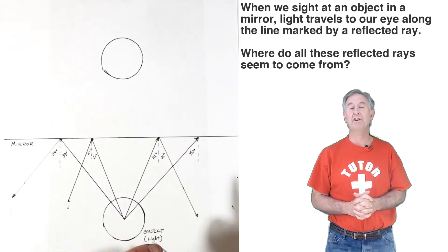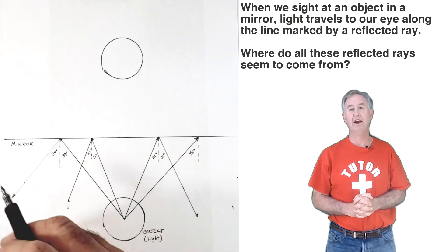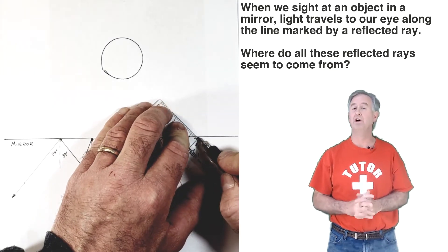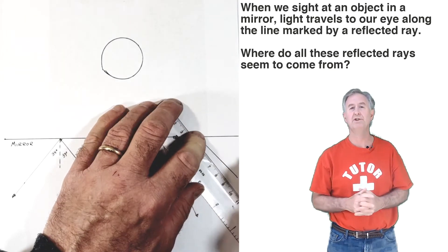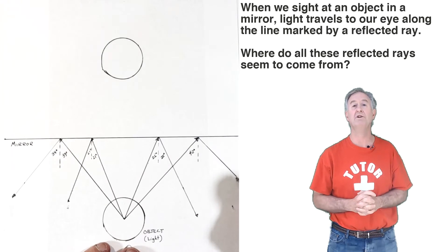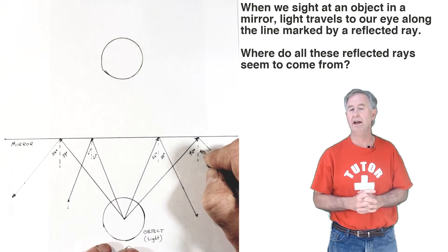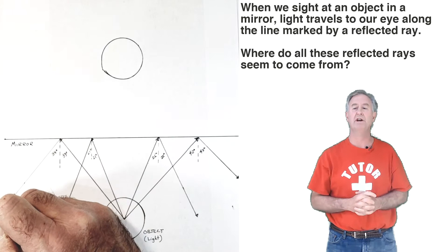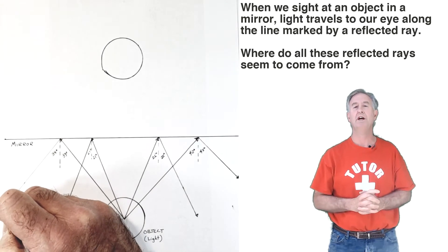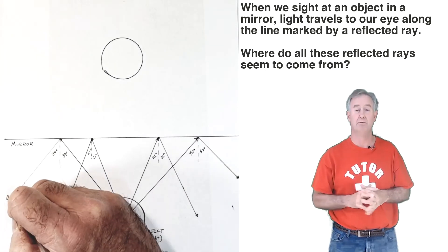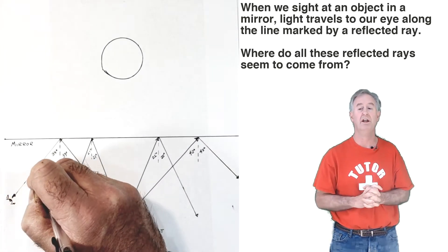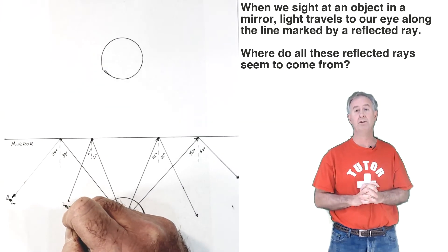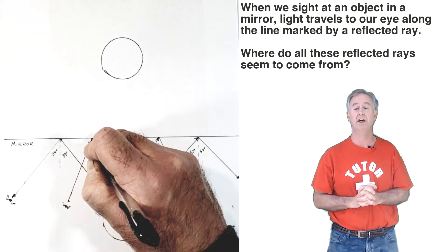To understand the answer to that question, I have to realize that to see anything, I have to look along a line at that thing. So to see an image of an object in the mirror, I have to look with my eye along a line at the image location. When I do, a reflected ray of light comes to my eye along that line. So if I want to see from this position, I have to look along the reflected ray's line.